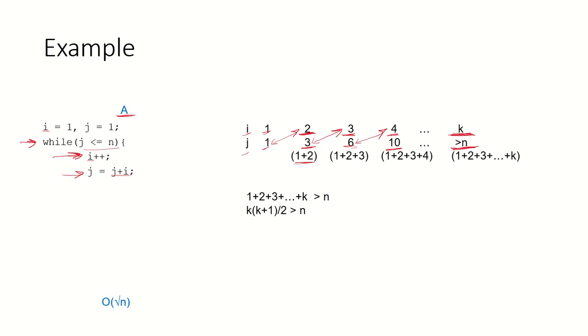We just know that when j was 3 this was 1 plus 2, then j became 1 plus 2 plus 3, then j became 1 plus 2 plus 3 plus 4 when i was 4. So when i is k, j will become 1 plus 2 plus 3 plus so on till k and that is the time when j will become n and after that this loop will not run.